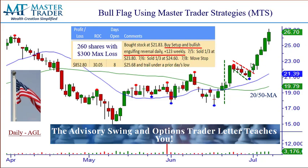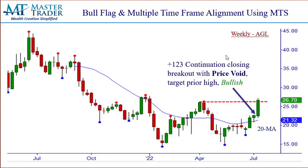Now we're in management mode. We entered over the high of this bar, and then it was very easy management. You can see demand is overwhelming supply; we just went into simple trail mode. It was approaching the prior highs, and we ended up selling last week right at about $26.90, right into strength. Take your money, avoid weekend risk.